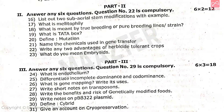Next, Part 2 has a total of 8 questions, of which 6 questions will be attempted. Question number 22 is a compulsory question — herbicide-tolerant crops, with 2 advantages. Each question carries 2 marks, totally 12 marks.